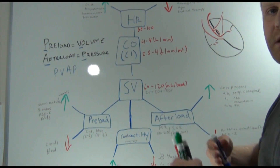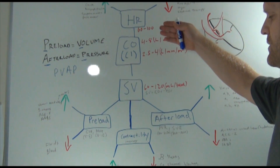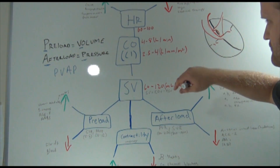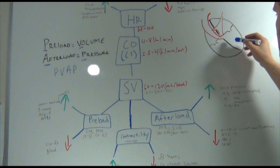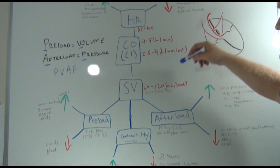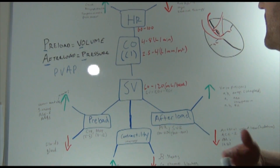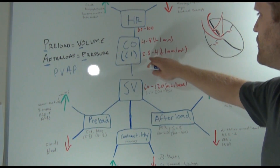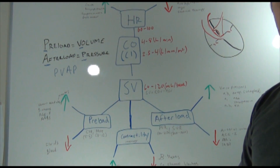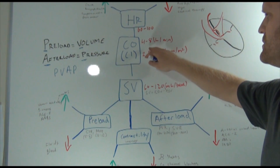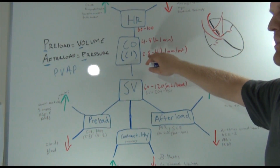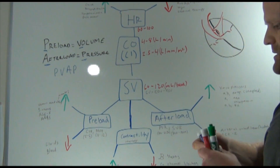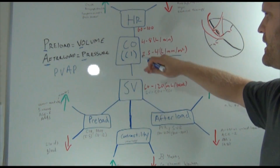These elements work with each other — stroke volume is affected by afterload and vice versa. Cardiac output is the volume of blood that leaves the heart per minute; normal is four to eight liters per minute. Because that number varies based on patient size, we multiply by body surface area to get the cardiac index, which should be about 2.5 to 4 liters per minute per meter squared.